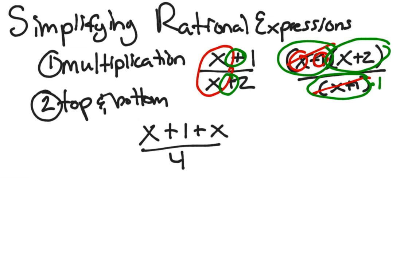You shouldn't simplify by canceling out these two x's. They're both in the numerator. They don't cancel each other out. In fact, they enhance each other. And this would actually simplify to 2x plus 1 over 4, since x plus x is 2x.